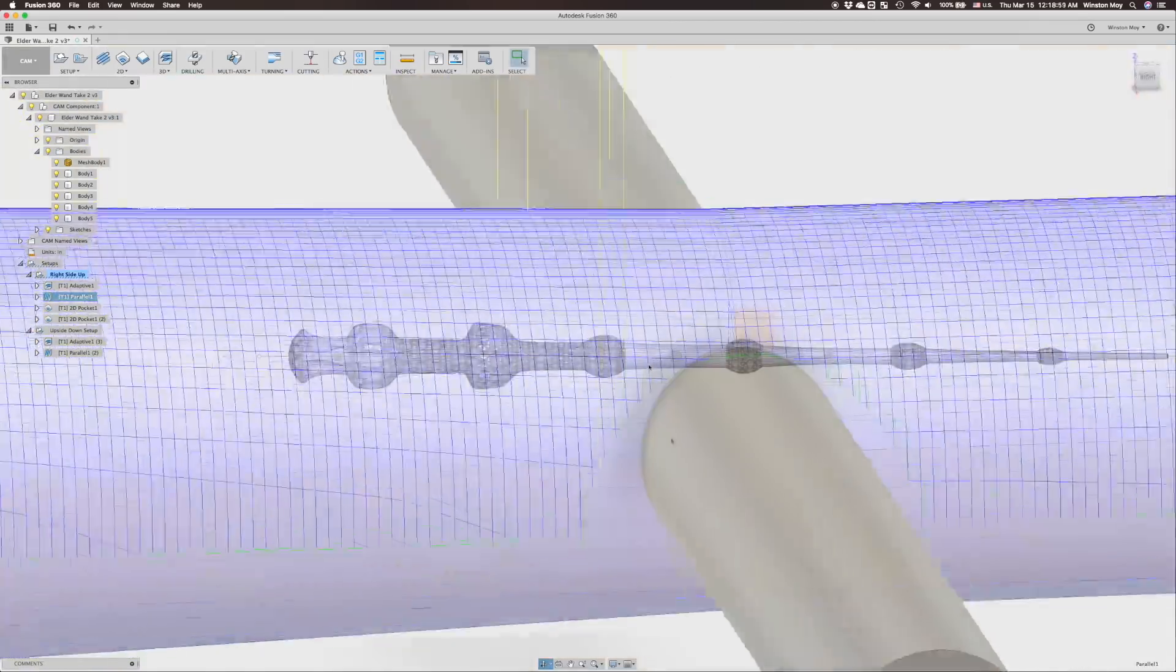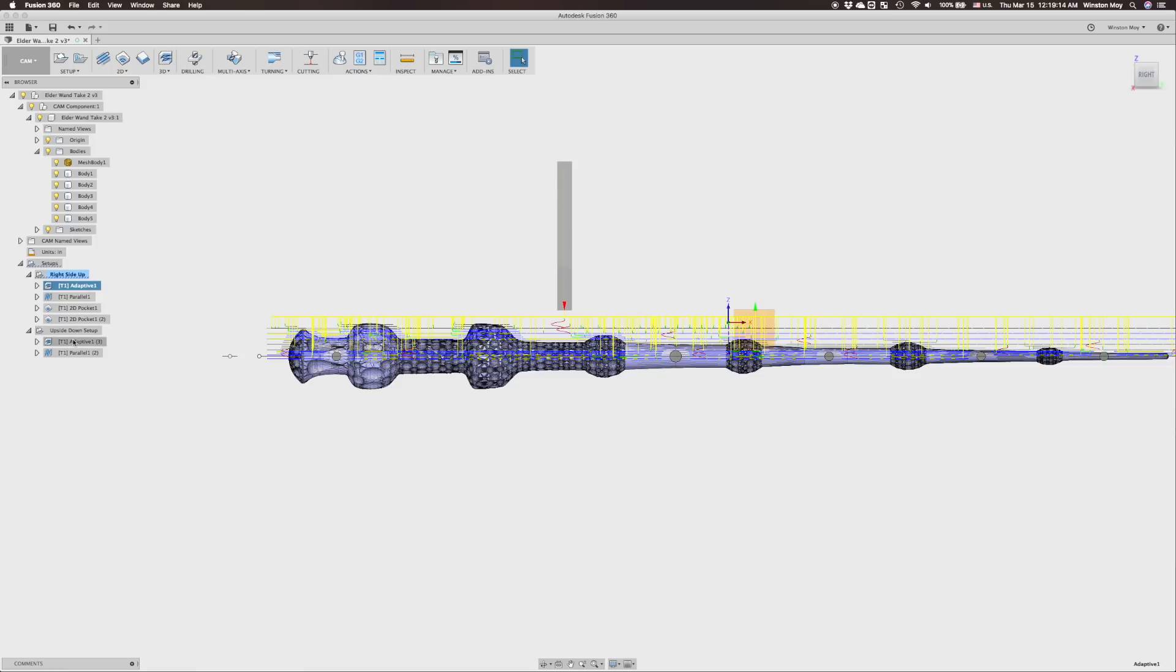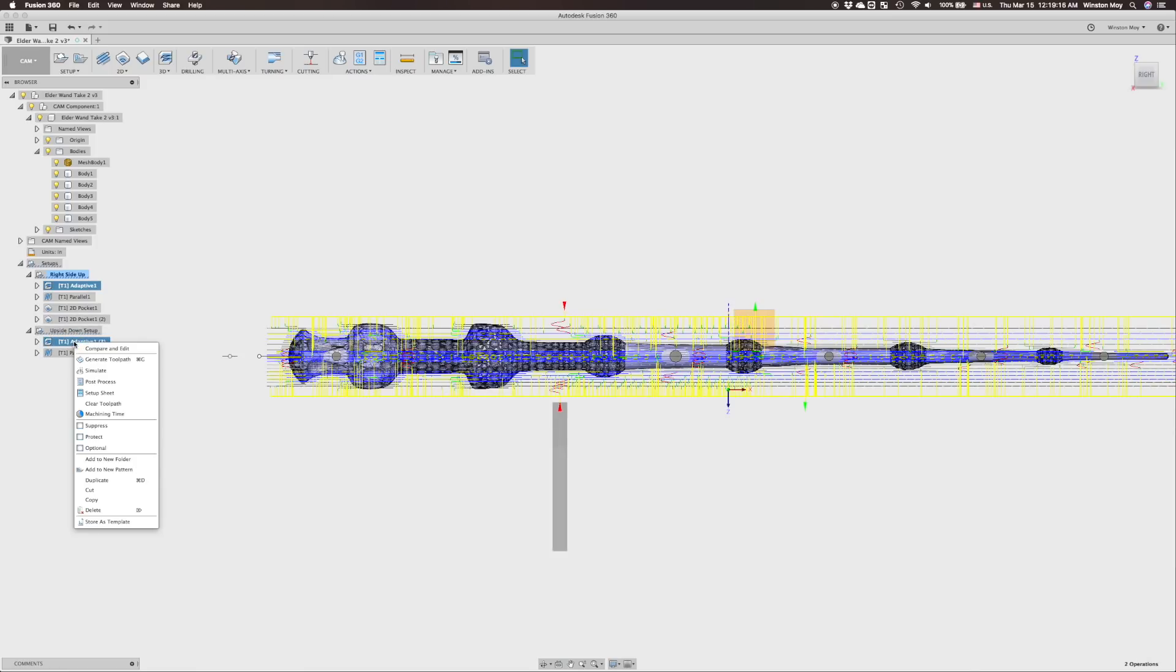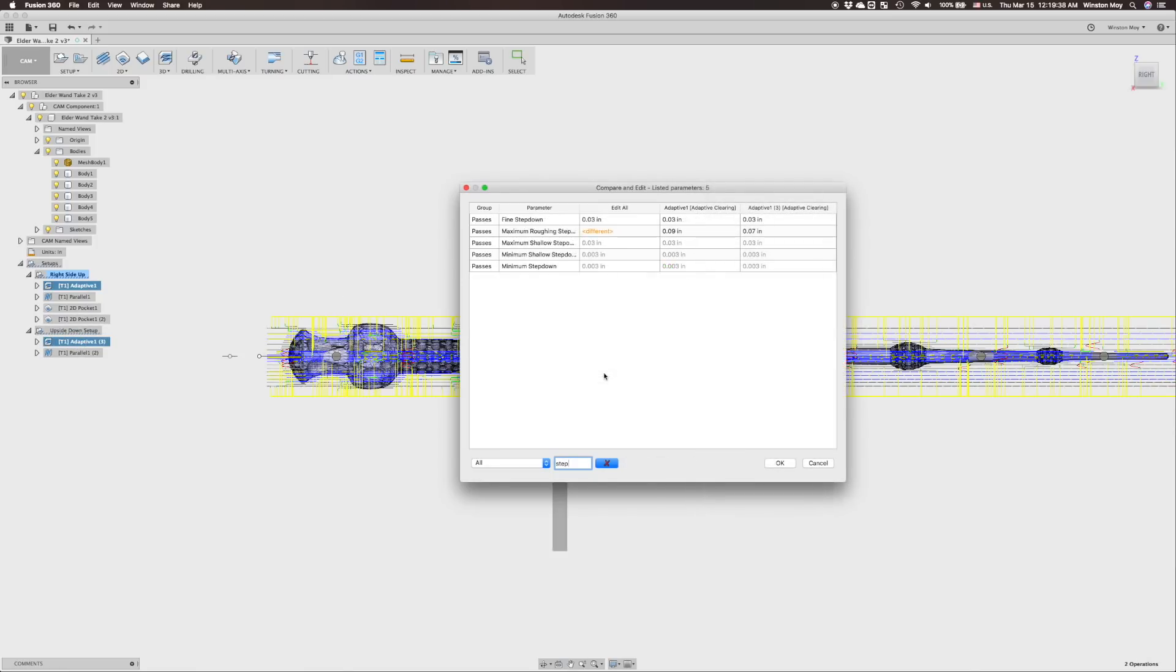For my reverse side adaptive clear, I chose more conservative cutting parameters because my stock would get weaker and weaker as more material was removed. I also didn't need to overshoot the halfway point of my stock since everything on the other side had already been cut away.